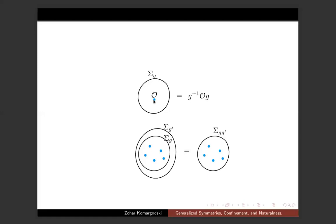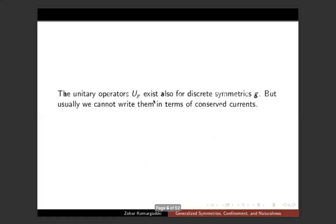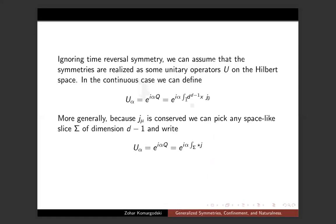When you say codimension-one — your diagram makes it look as always codimension-one in space — is it codimension-one in space or in spacetime? This is the spacetime diagram, so you should think about the vertical direction as time and the horizontal direction as space. It's codimension-one in spacetime, since we've integrated over the whole space.